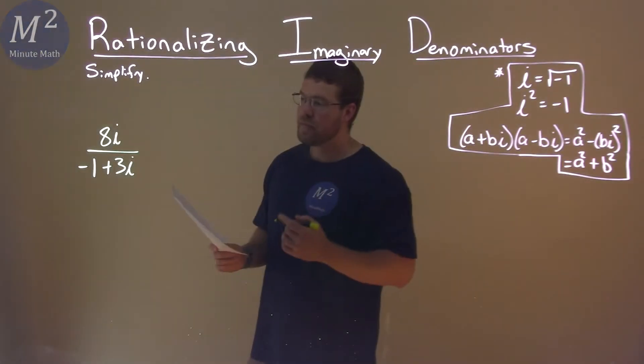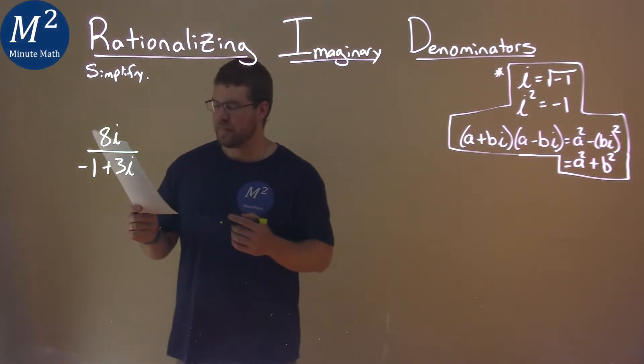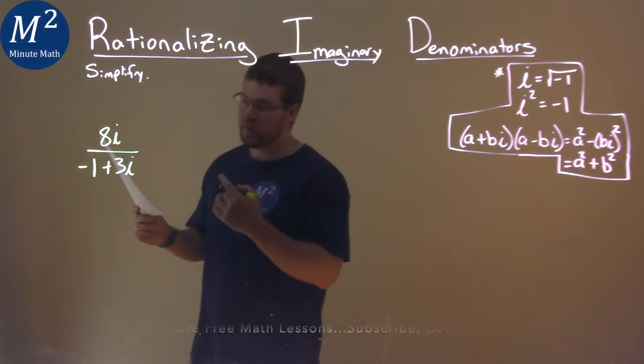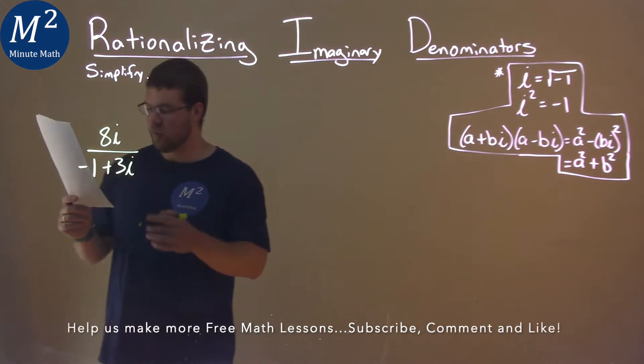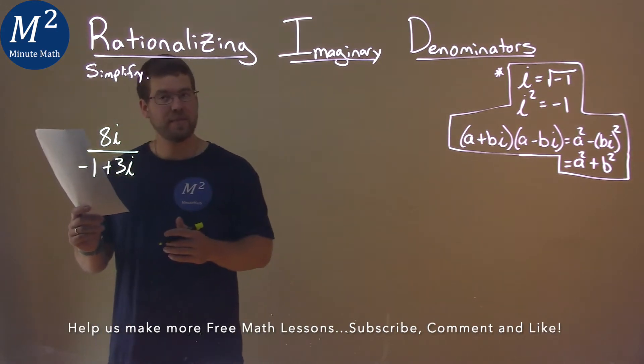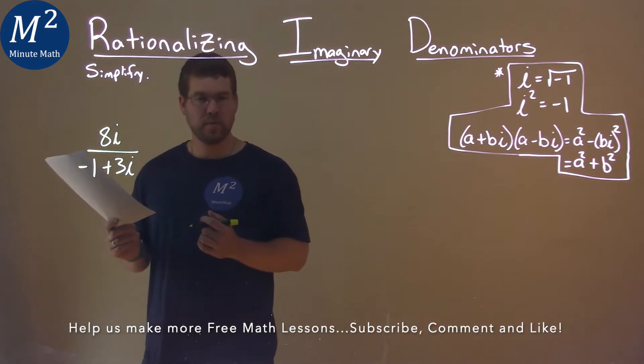We're given this problem right here: 8i over negative 1 plus 3i, and we've got to simplify this.